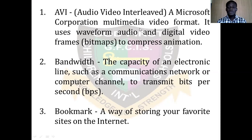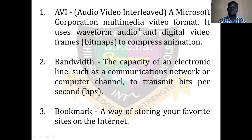The second term is bandwidth. This is one of the common things we are familiar with. Bandwidth is the capacity of an electronic line, such as a communication network or computer channel, to transmit bits per second. When we talk about bandwidth, we are talking about the capacity of an electronic device or communication network to move information — how much information your computer can move over the network, either per minute or per second. Virtually all our network providers offer various bandwidth levels, each with different speeds and qualities.